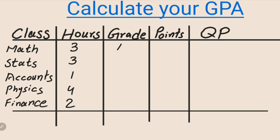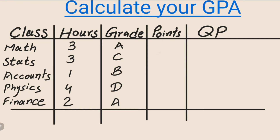You get different grades in each subject. For Math you get an A, for Stats you get a C, for Accounts a B, for Physics a D, and for Finance an A.